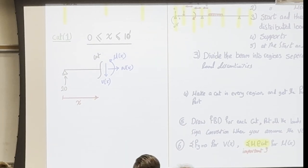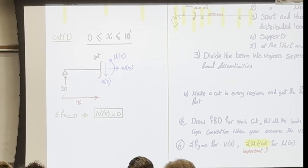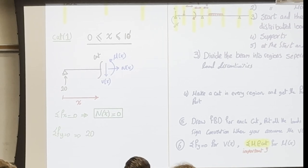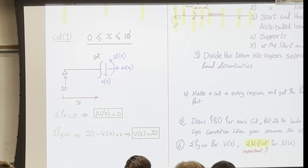Now solve for the functions. ΣFx = 0 gives N(x) = 0. ΣFy = 0: the reaction 20 goes up, V(x) goes down — so 20 - V(x) = 0, giving V(x) = 20. The shear function in region 1 is constant and equal to 20.